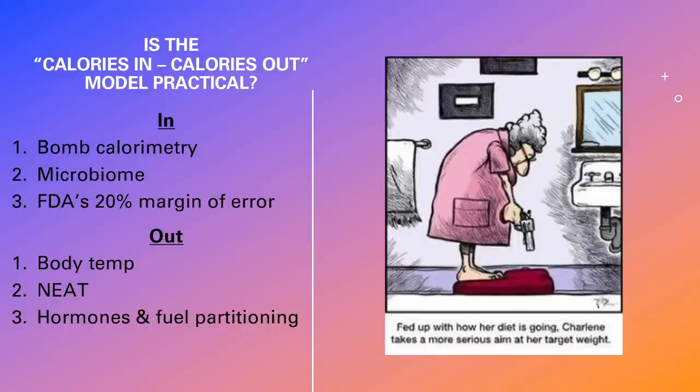I have a strong stance here and I'm not going to hide from it. These are just some of the reasons the calories-in-calories-out model is impractical. I'm not saying calories-in-calories-out doesn't apply to humans — it's thermodynamics, and thermodynamics applies to all physical systems. What I'm saying is it's completely impractical in a real human context because you can't measure calories in, you can't measure calories out — so what's the point? I really like this slide to sum it up: 'Fed up with how her diet is going, Charlene takes a more serious aim at her weight' — you might as well be shooting your scale.